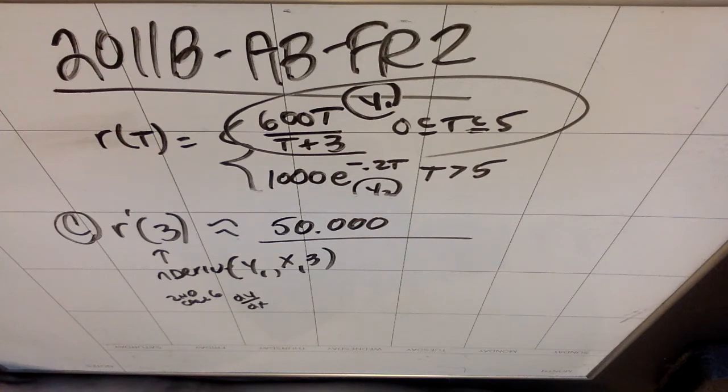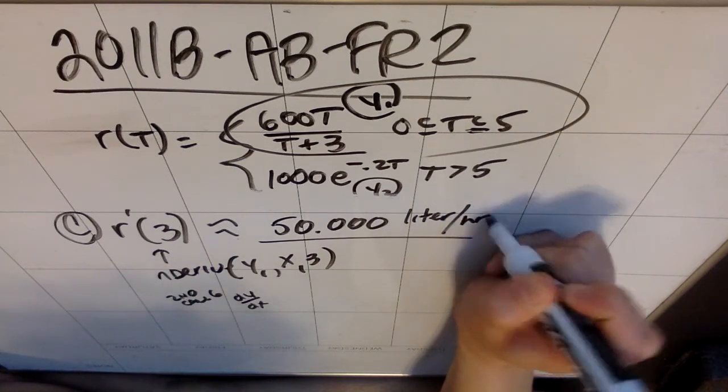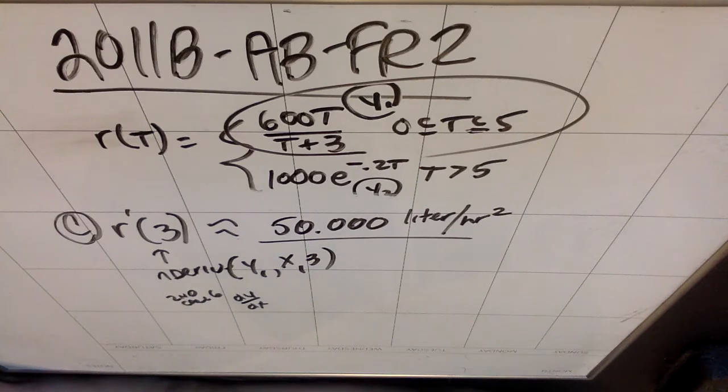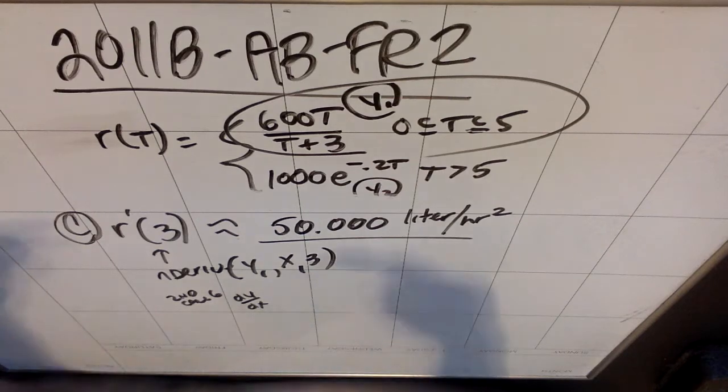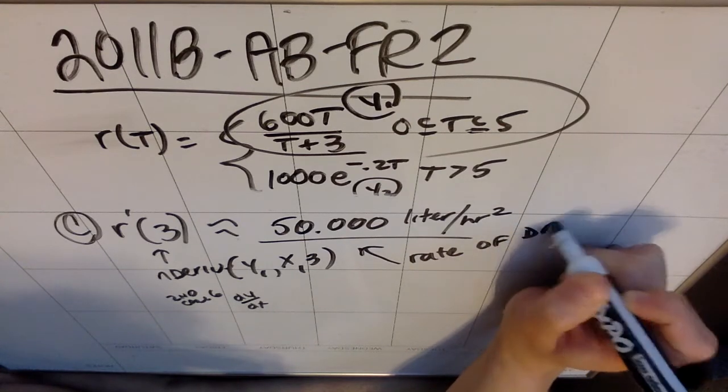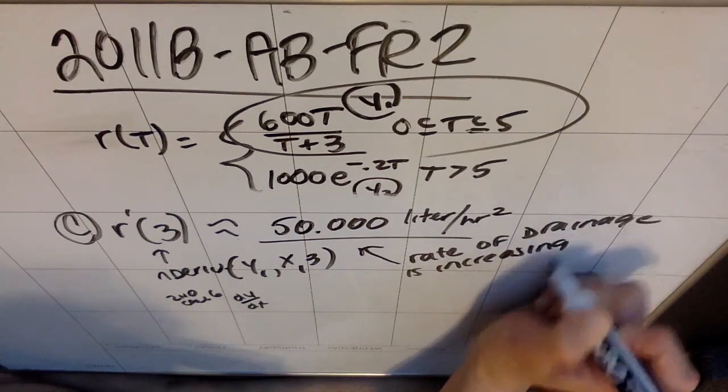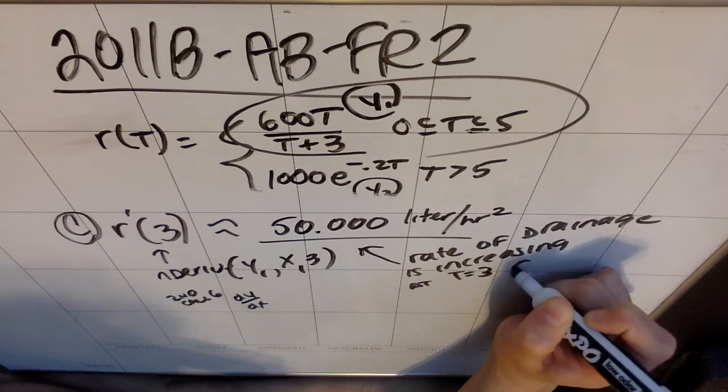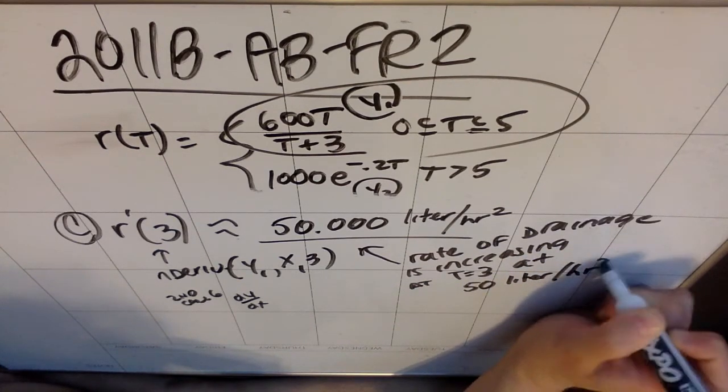Now, I need to give units for that. If this is liters per hour, then this is liters per hour per hour. So, you could either say liters per hour per hour, or you could say liters per hour squared. Now, they asked me to interpret the meaning. So, the rate at which the water is draining out at time t is increasing at a rate of 50 liters per hour per hour, because this is the rate of the rate. So, what this means is that the rate of the drainage is increasing at t equals 3 at 50 liters per hour per hour, or per hour squared.